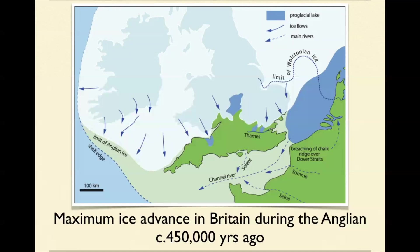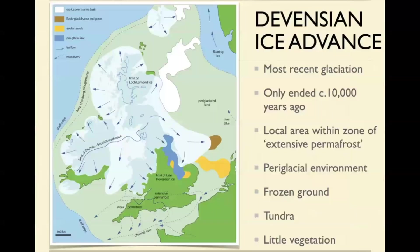There are bodies of water here, but the Thames, the Somme, the Seine — basically all of the north European rivers and all the south British rivers — emptied down into what's called the Channel River, which went all the way down to the shelf edge. All of this was land. There was no distinction.